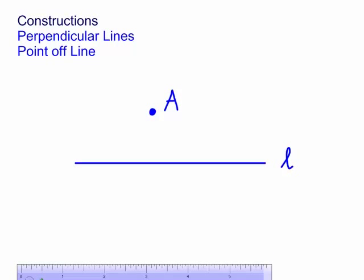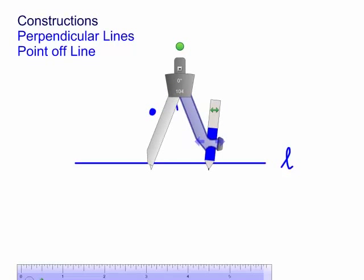I need to construct a right-angled line through A, in other words, perpendicular to L. So how are we going to do it? Well, first up, we all get our compass.